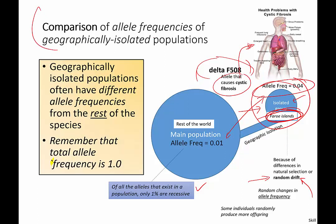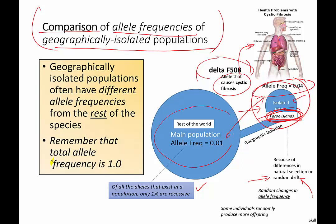Let's go back to the title: comparison of allele frequencies of geographically isolated populations. In conclusion, geographically isolated groups like those of the Faroe Islands tend to have allele frequencies that are significantly different from the main population. In a case of a negatively affecting allele, it can actually exacerbate problems. So the bottom line is: don't do inbreeding with your family.